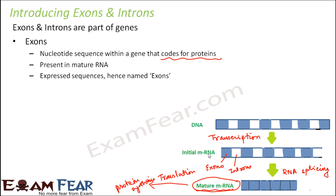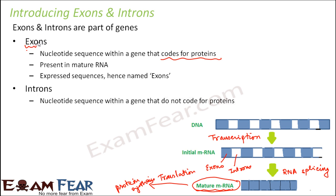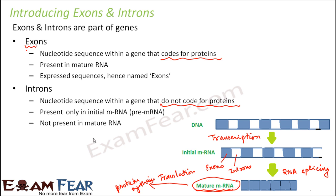Exons are called expressed sequences — that is why they are named exons. Introns are nucleotide sequences which do not code for proteins, so they are not expressed. Introns are present only in the initial RNA, also known as pre-mRNA, and not in the mature RNA. They are called introns because they are intervening sequences — they act like interrupts between the exons.